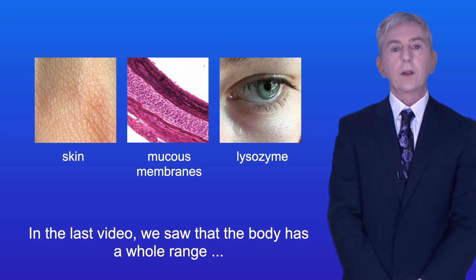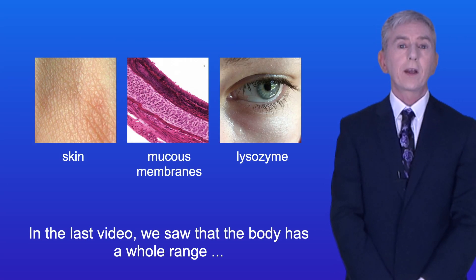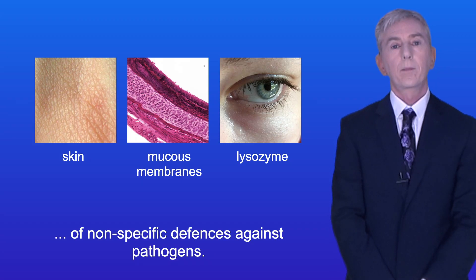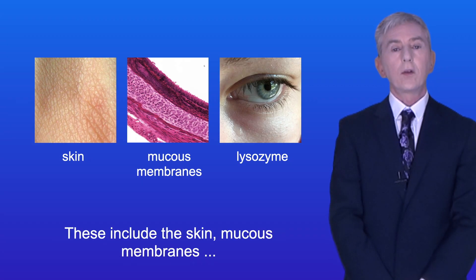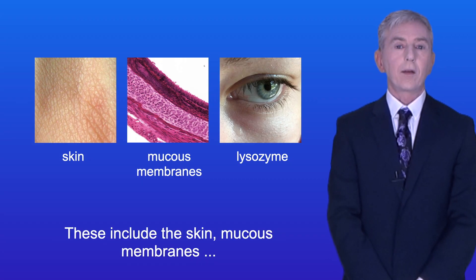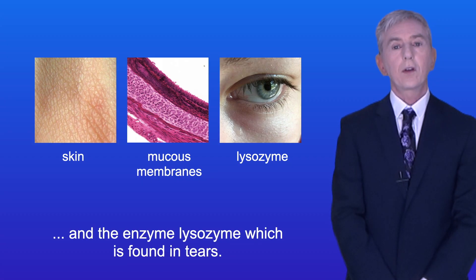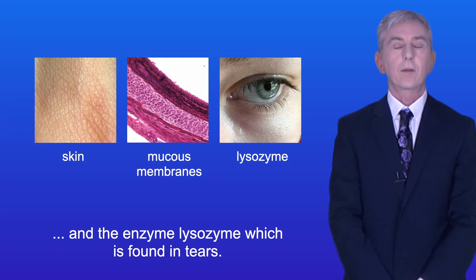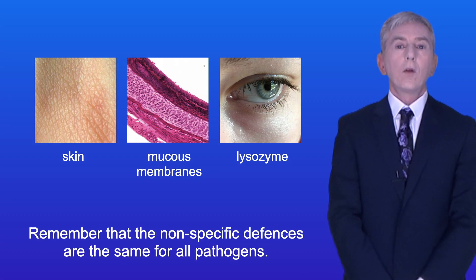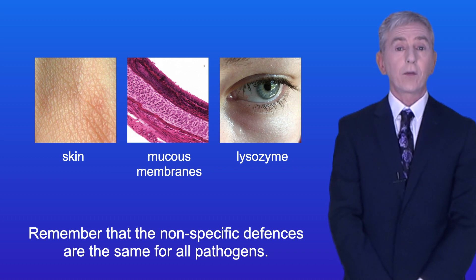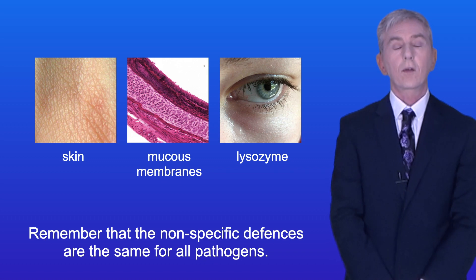In the last video we saw that the body has a whole range of non-specific defenses against pathogens. These include the skin, mucous membranes, and the enzyme lysozyme which is found in tears. Remember that the non-specific defenses are the same for all pathogens.